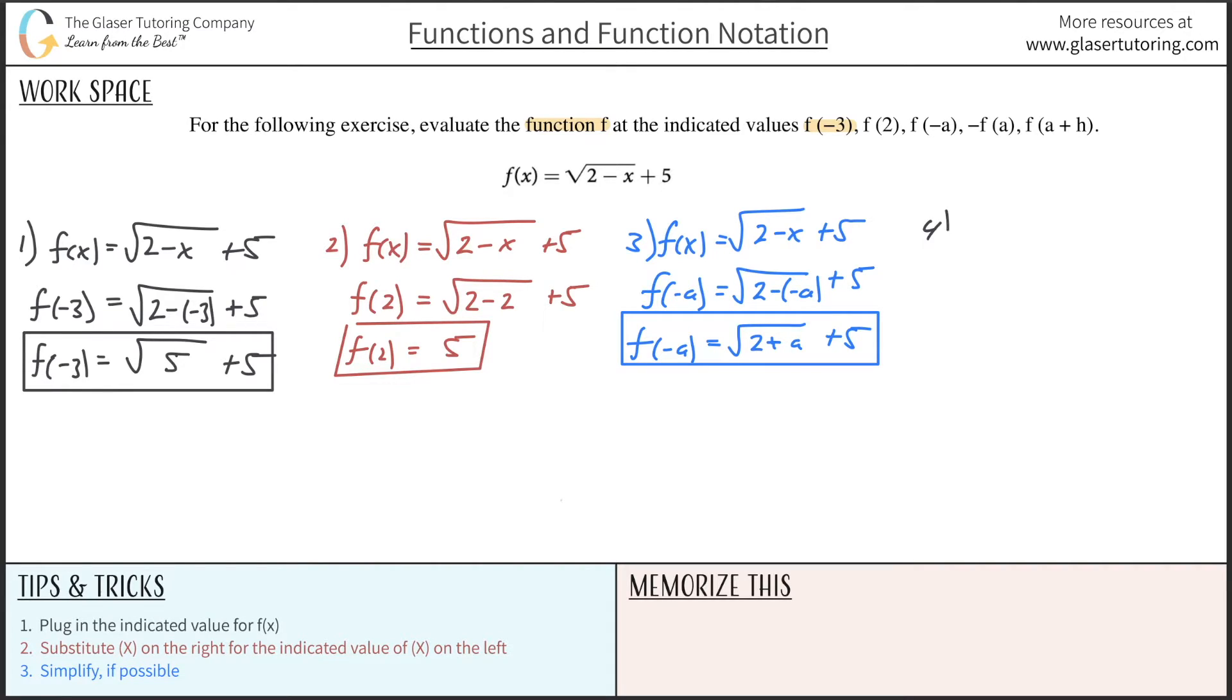Take a look at number 4. So now number 4, rewrite the expression. So radical 2 minus x plus 5. Now they want us to substitute in negative f of a. So basically what they're telling us is they want us to take this function and first negate it, find the negative of it. Okay. So that's the first thing they want us to do.